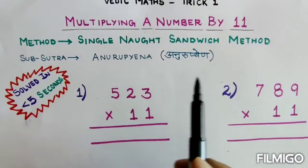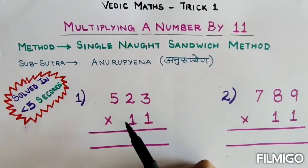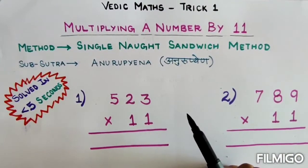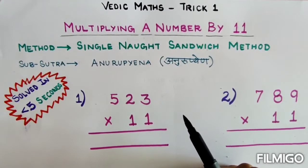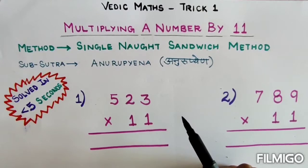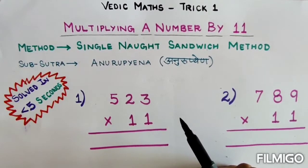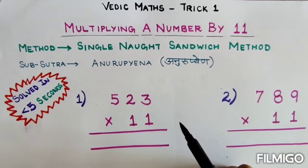Let's see how we can multiply any number by 11 in less than 5 seconds. I will demonstrate a method by which you can solve any number multiplying by 11 in less than 5 seconds.